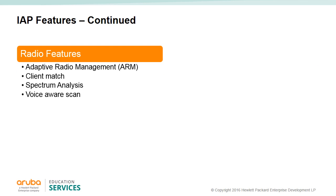Aruba's Adaptive Radio Management (ARM) technology is also implemented on the IAPs. This automatically manages the wireless LAN 2.4 and 5 GHz radio bands to optimize Wi-Fi client performance and mitigate RF interference. It also ensures that each Aruba Instant AP uses the optimal channel and transmit power for its RF environment. The IAP has many features including client match, which continuously monitors a client's RF neighborhood to provide an enhanced Wi-Fi experience and, if needed, an AP or band reassignment. For troubleshooting, APs can be used as spectrum monitors.